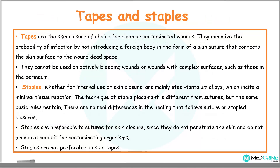We have clips and staples. A clip is a skin closure of choice for clean or contaminated wounds because it minimizes the possibility of infection by not introducing a foreign body in the form of a skin suture connecting the tissue surface to the wound dead space. Clips cannot be used in actively bleeding wounds or wounds with complex surfaces such as those in the perineum. Staples, whether for internal use or skin closure, are mainly steel-tantalum alloys known to incite minimal tissue reaction. There are no real differences in the healing that follows suture or staple closures. Staples are preferable to sutures for skin closure because they do not penetrate the skin and do not provide a conduit for contaminating organisms, though staples are not preferable to skin clips.